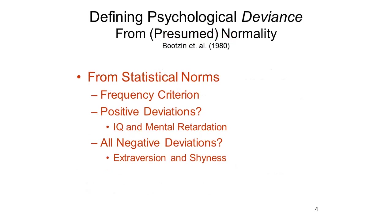Having identified a sort of prototype for normality, how do we characterize deviance? Deviations from normality can be defined in various ways. Perhaps the easiest is deviance from statistical norms. By statistical convention, a score is abnormal if it lies more than two standard deviations above or below the population mean. This frequency criterion is certainly objective, but it has some problems—not least the problem of estimating population means for all the various mental characteristics on which people might deviate. But that's a practical problem; in principle, we can define deviance in statistical terms.